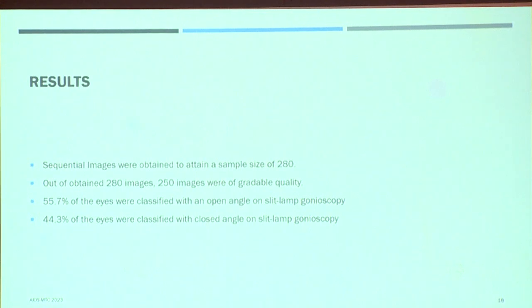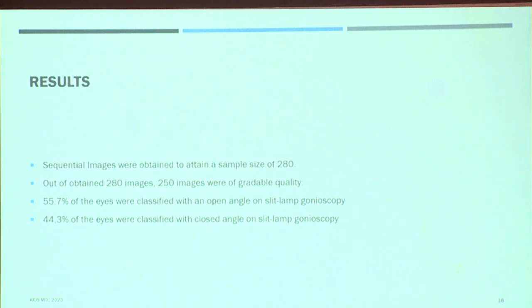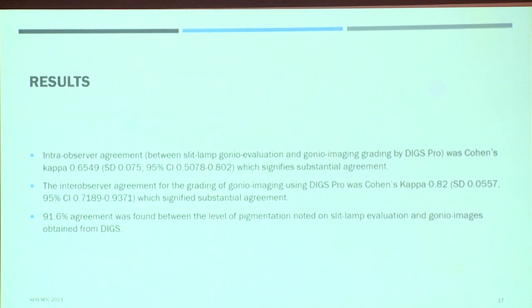Sequential images were obtained. For a sample size of 250, we attained 280 images, of which 250 were of gradable quality. 55% of patients had open angle and 44% had closed angle. The intra-observer agreement was 0.65, signifying substantial agreement, and the inter-observer agreement was 0.82, also a clinically substantial agreement. We also targeted trabecular meshwork pigmentation, and 91.6% of trabecular meshwork pigmentation was correlating.